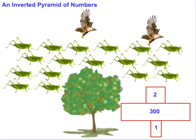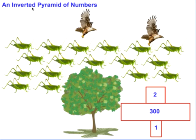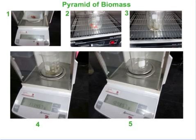The pyramid of numbers can sometimes get out of pyramid shape and become inverted. As this diagram illustrates, one large tree could be home to thousands or hundreds of insects, and then just a couple of predators could feed on those hundreds of insects. If the pyramid of numbers must reflect the number of individual organisms, it would be skewed or out of pyramid shape.